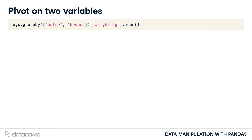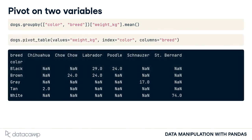You also previously computed the mean weight grouped by two variables, color and breed. We can also do this using the pivot_table method. To group by two variables, we can pass a second variable name into the columns argument. While the result looks a little different than what we had before, it contains the same numbers. There are NaNs, or missing values, because there are no black chihuahuas or gray labradors in our dataset, for example.